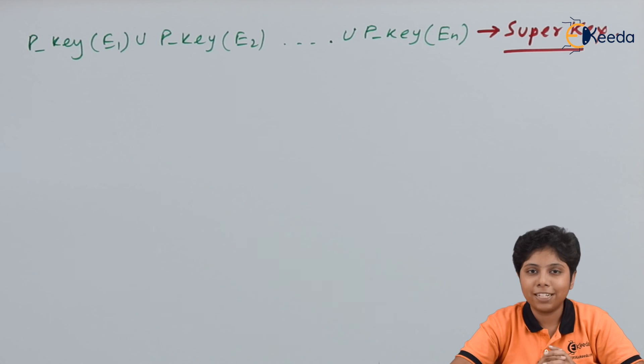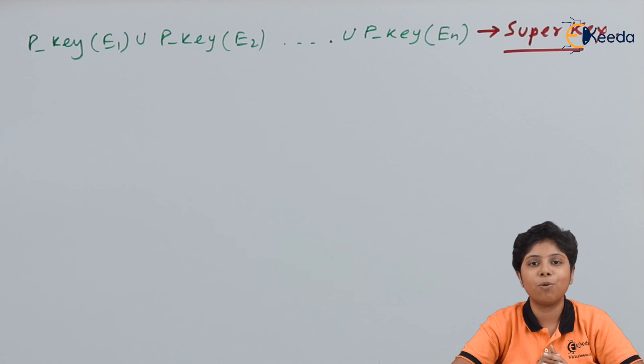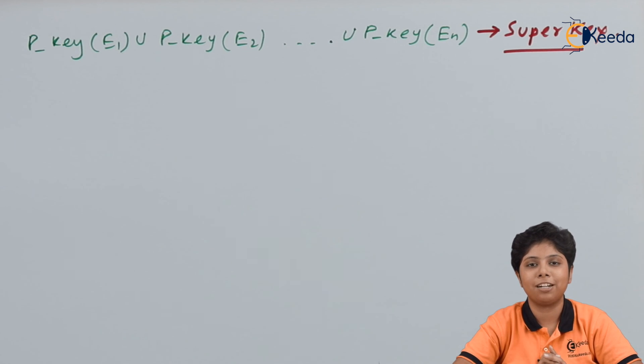Those are the constraints to keep in mind while changing primary keys, participation constraints, and mapping cardinalities. Thank you for watching this video, stay tuned with Ikira and subscribe to Ikira.